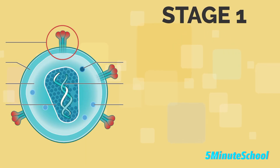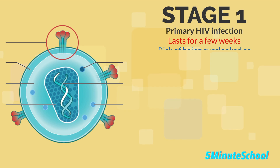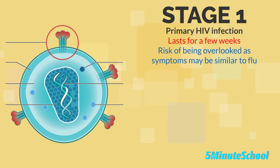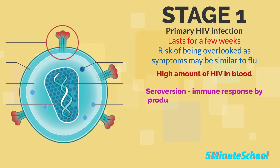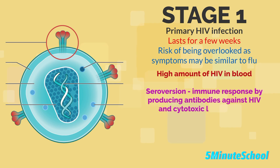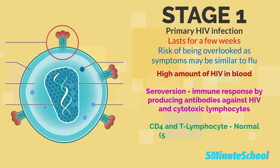Stage 1 is the primary HIV infection. This stage lasts for a few weeks, and it may be associated with flu-like symptoms. At this stage, the diagnosis of HIV can be overlooked because symptoms may come across as the flu. There is a high amount of HIV in the blood. The immune system responds by producing antibodies to HIV and cytotoxic lymphocytes, and this process is known as seroconversion.